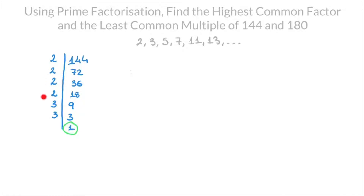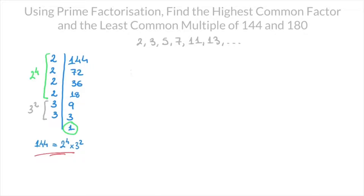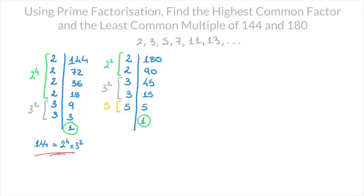Looking at the left-hand column, this tells us that 144 equals 2 × 2 × 2 × 2 × 3 × 3. Since we have 2 × 2 × 2 × 2, that's 2 to the power of 4, and 3 × 3, that's 3 to the power of 2. So we can state that 144 equals 2 to the power of 4 times 3 to the power of 2. That's 144 written as a product of its prime factors. Doing the same for 180 leads to the following: 180 equals 2 to the power of 2 times 3 to the power of 2 times 5.